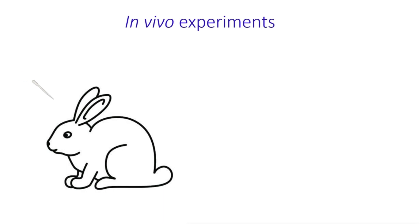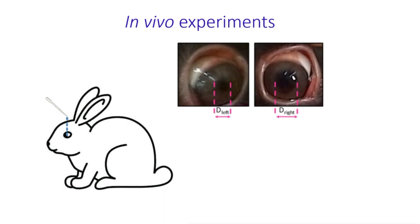Pilocarpine hydrochloride formulations were applied as drops in the left eye, and the right eye served as a control. It caused left eye pupil constriction, which was non-invasively monitored using a web camera. The difference between the pupil diameter in the left and right eye at different time intervals indicated the efficiency of drug delivery.